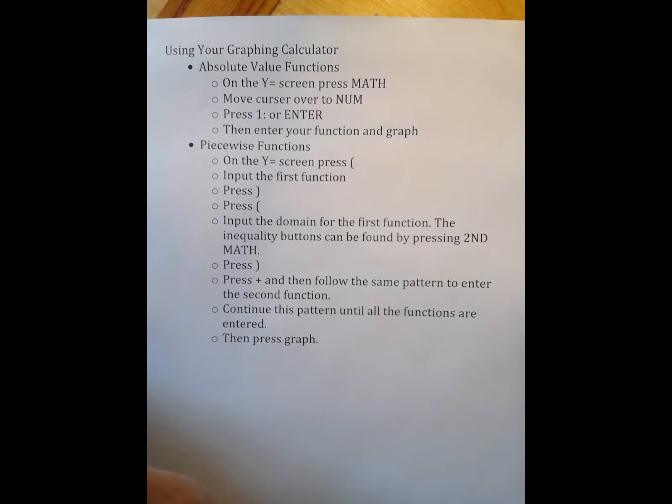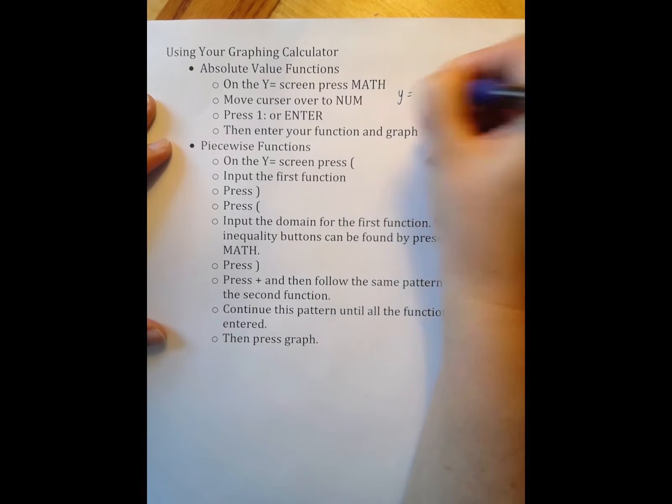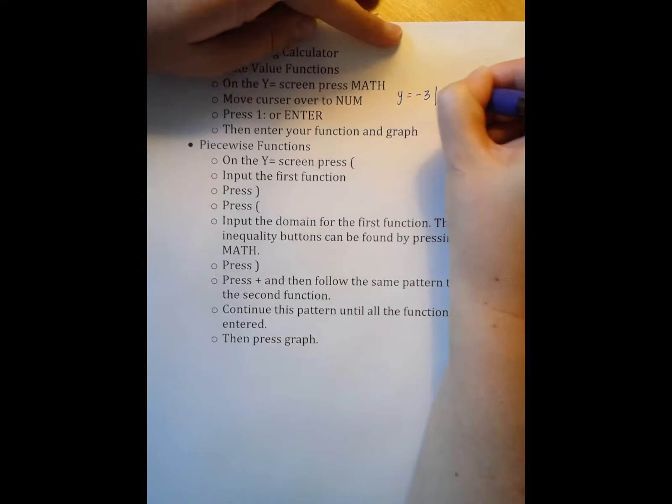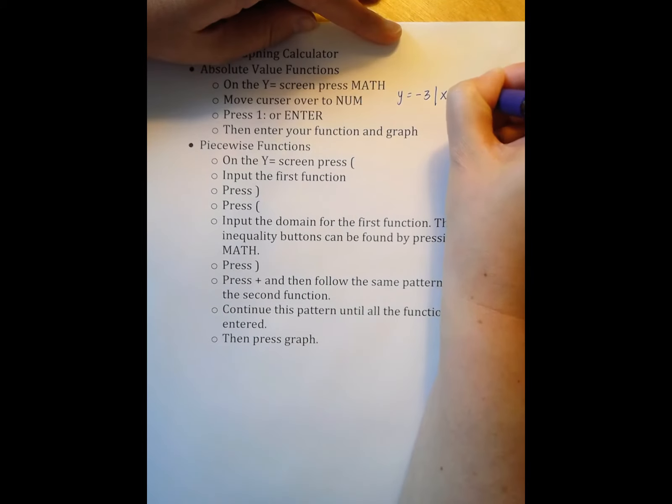These notes are on using your graphing calculator to graph absolute value functions and piecewise functions. Let's come up with an absolute value function: y equals negative 3 absolute value x minus 4 plus 2.